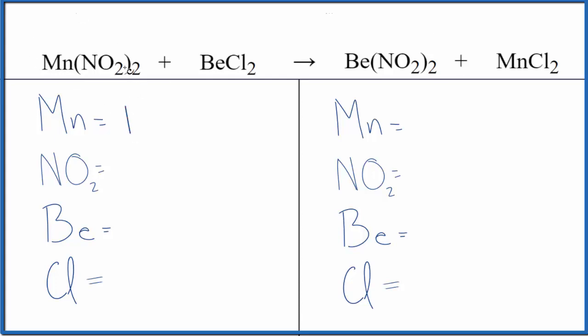We have one manganese atom and here's the trick. This NO2, this nitrite ion, we have it here and we have it here. So we're just going to count it as one thing and that'll make it a lot easier to balance this equation. So we have two nitrite ions here, one beryllium and two chloride ions.